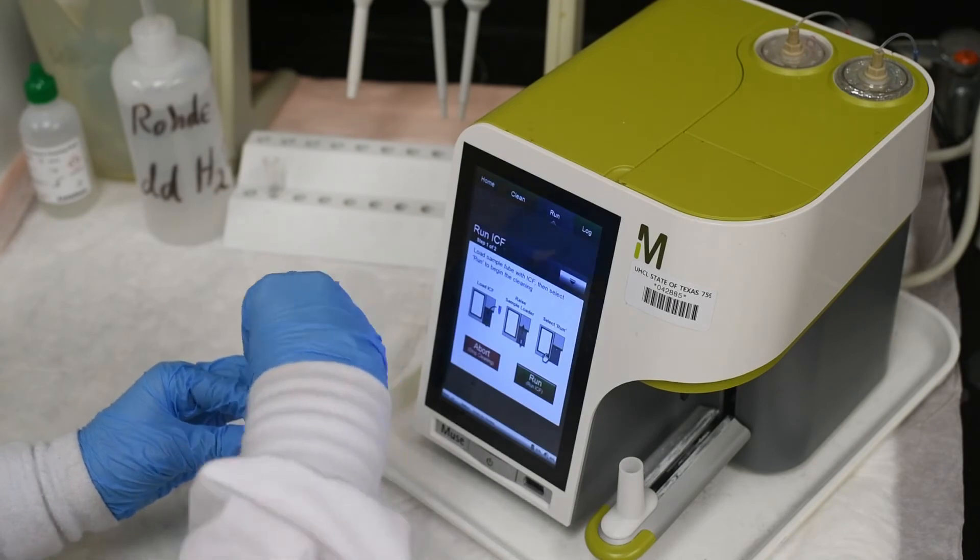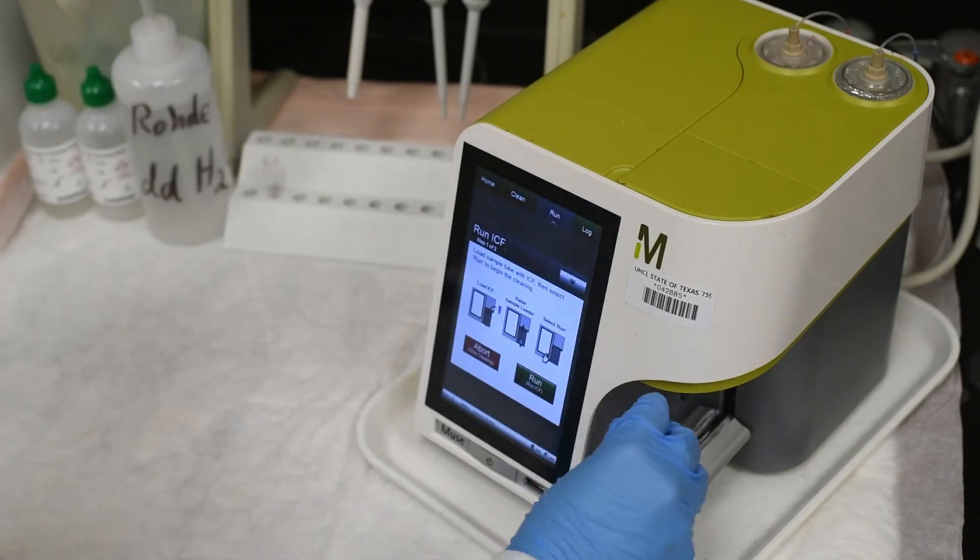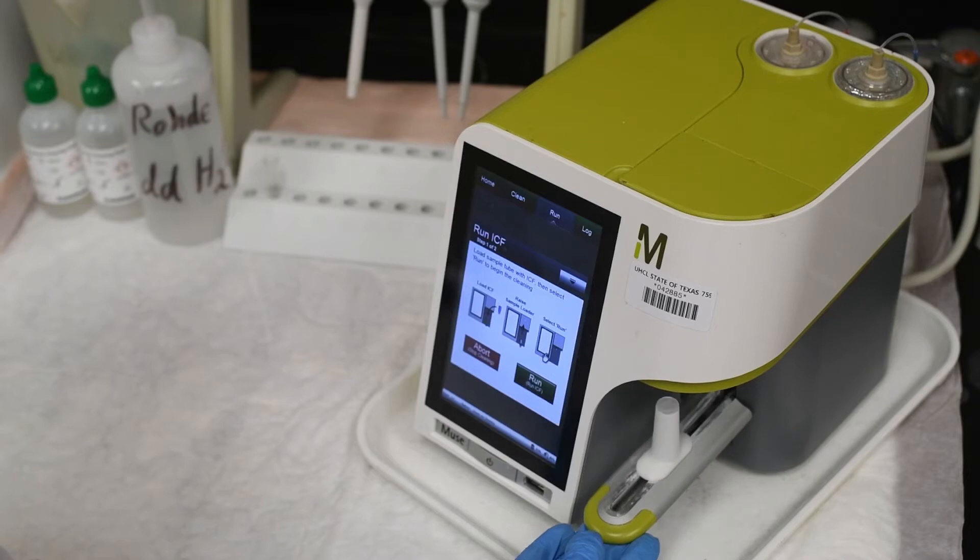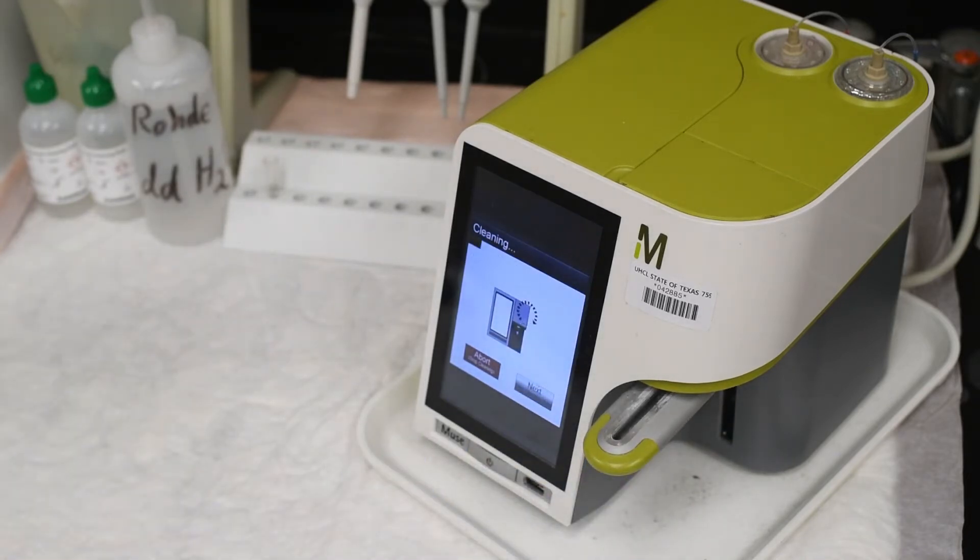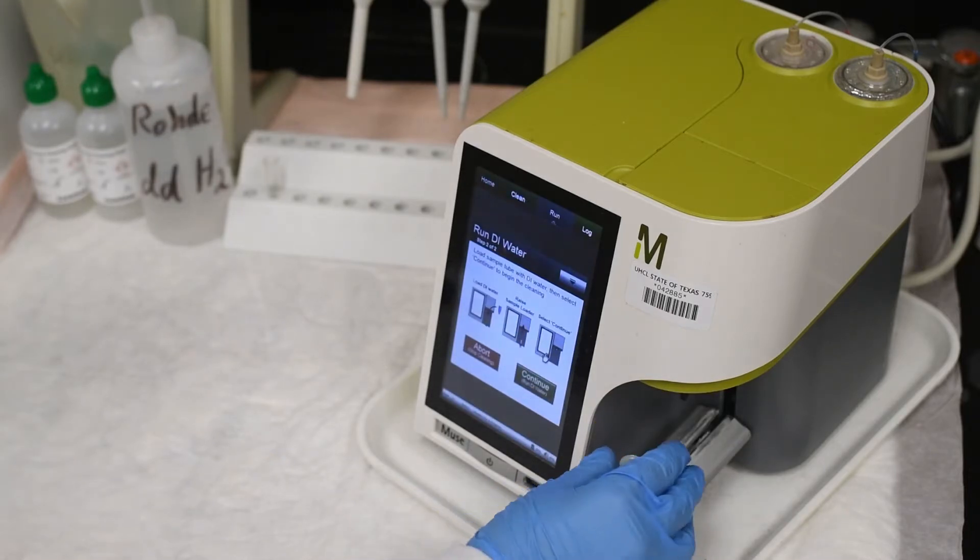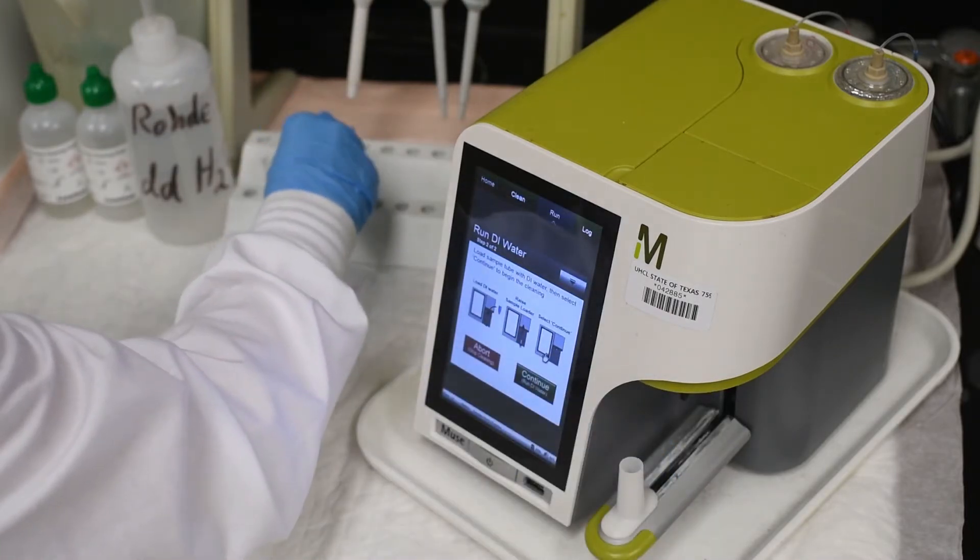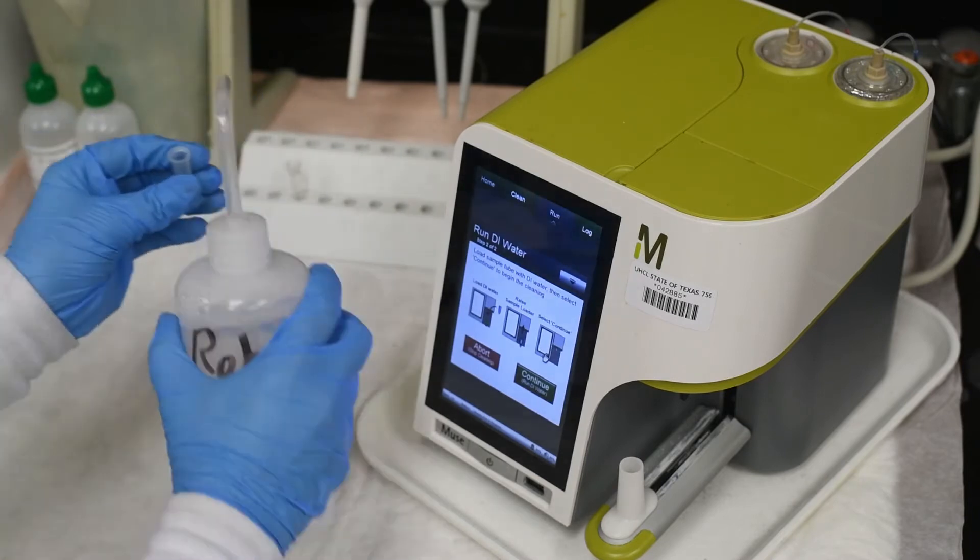Grab a 2-milliliter tube that does not have a cap attached or screwed on and add ICF. It is critical to use a tube with no attachments, as they will break the capillary in the sample loader when loaded into the cartridge. When raising the sample loader, do so slowly to ensure the equipment will not break. Once the cleaning is complete with ICF, run the steps again with deionized water.